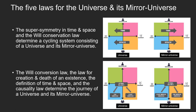Let me explain the functioning of the five laws in a cycling model. The super symmetry in time and space tells us two things. First, a universe has a mirror universe, and the direction of time and space in the mirror universe is opposite to that in the universe. Second, the speed of the time and space clock is defined differently between the universe and its mirror universe. The real conservation law tells us that a universe and its mirror universe are connected at two points — they form a cycling.